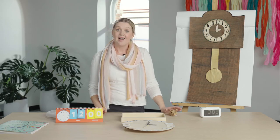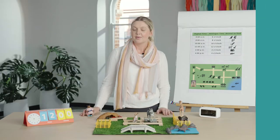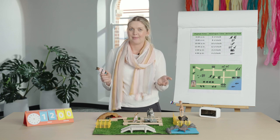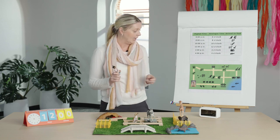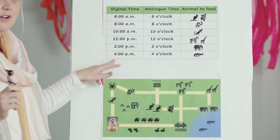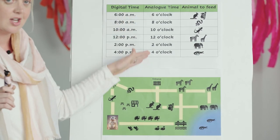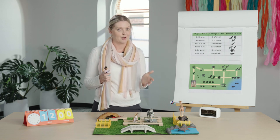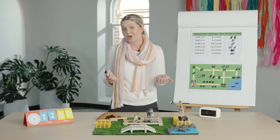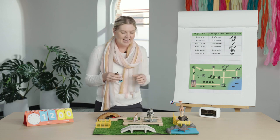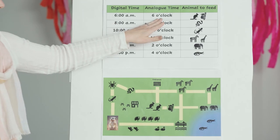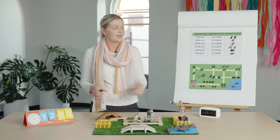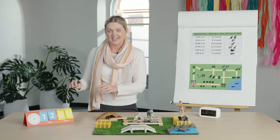Thank you for joining in the nursery rhyme with me. Now you might remember our friend Ollie. Ollie has a very exciting job today — she is filling in for the zookeeper at the local zoo. The zookeeper has given Ollie a map and also a schedule to follow. Ollie's job is to follow the schedule and feed the correct animal at the correct time, but she is still learning about o'clock times using analog and digital clocks, so she needs our help.